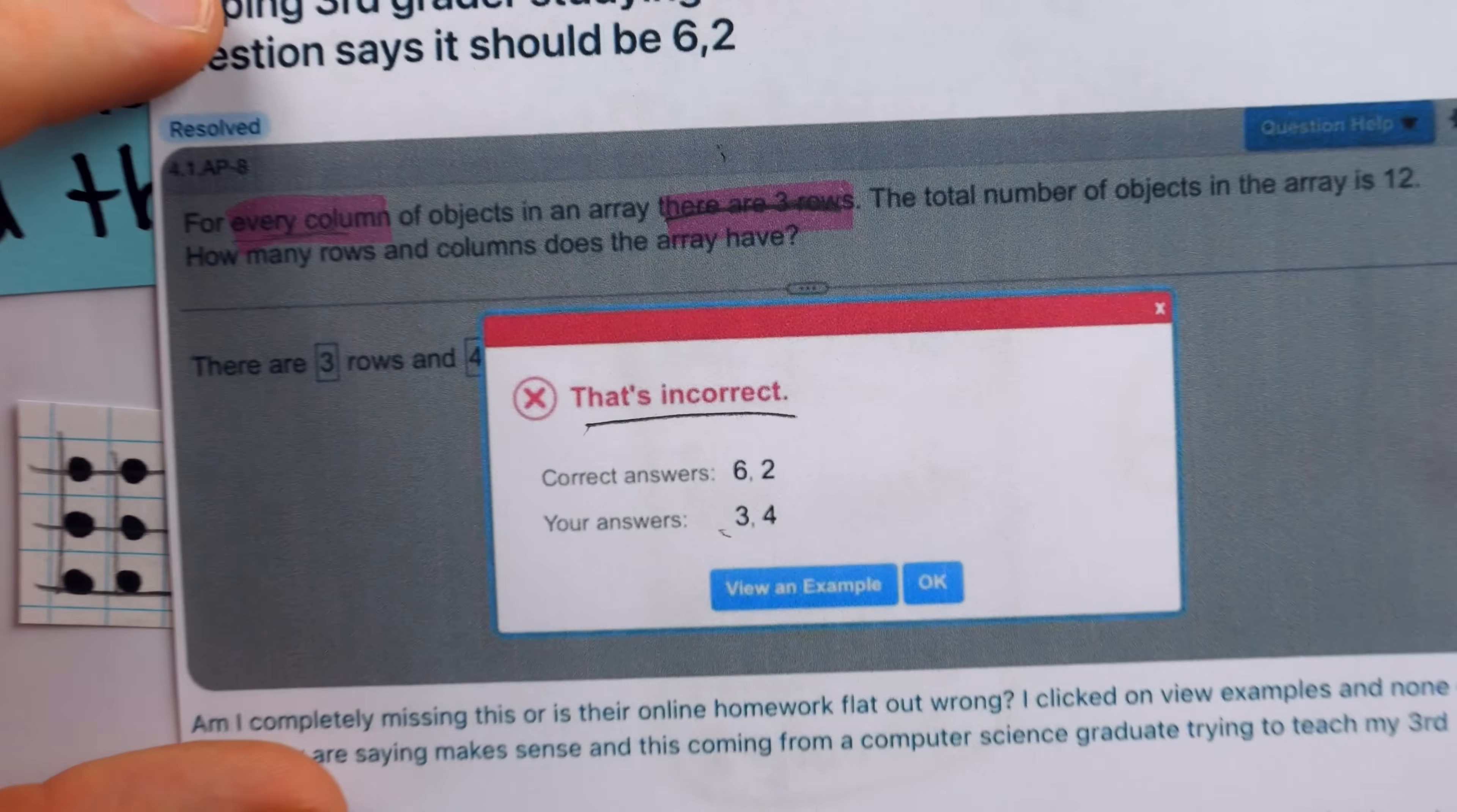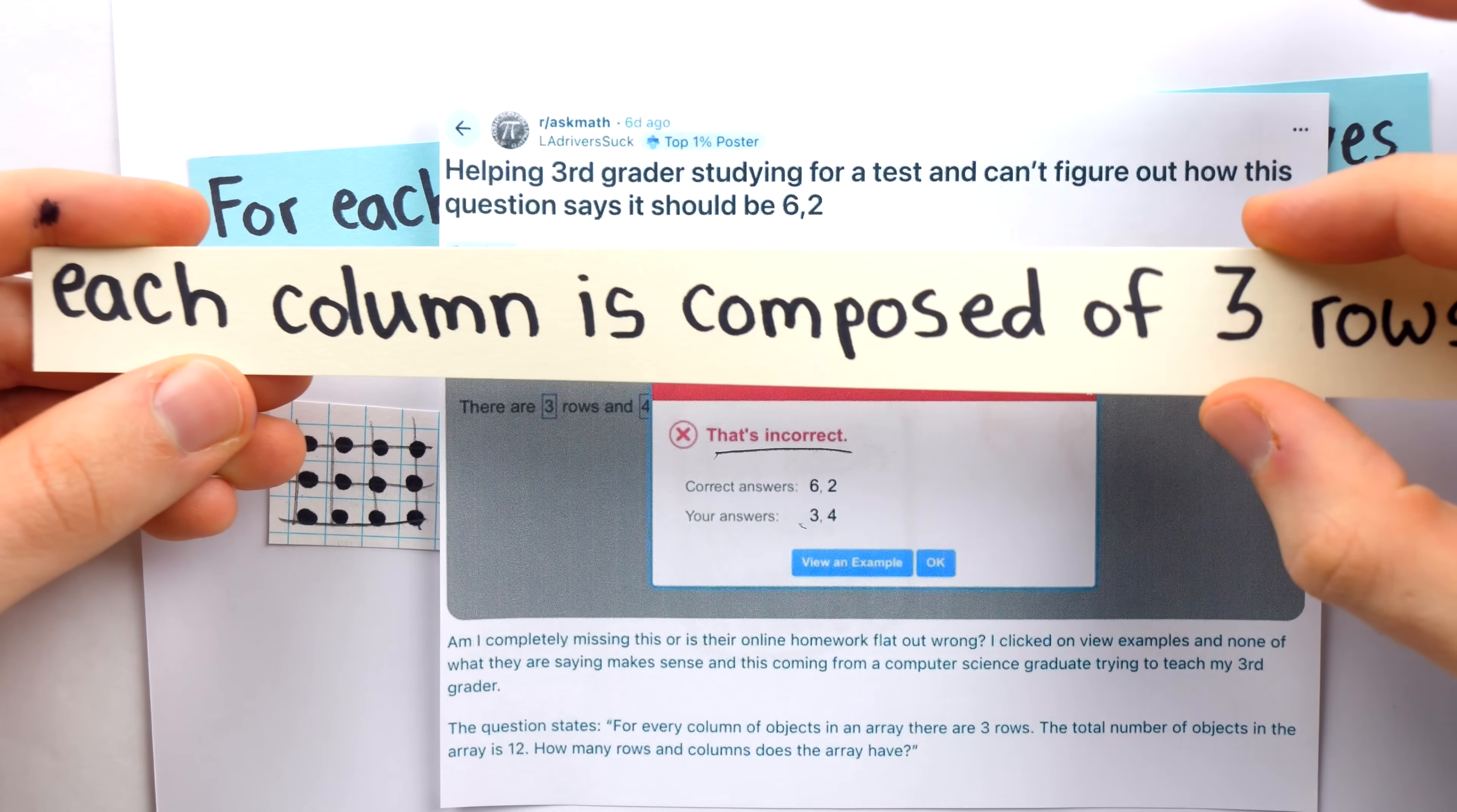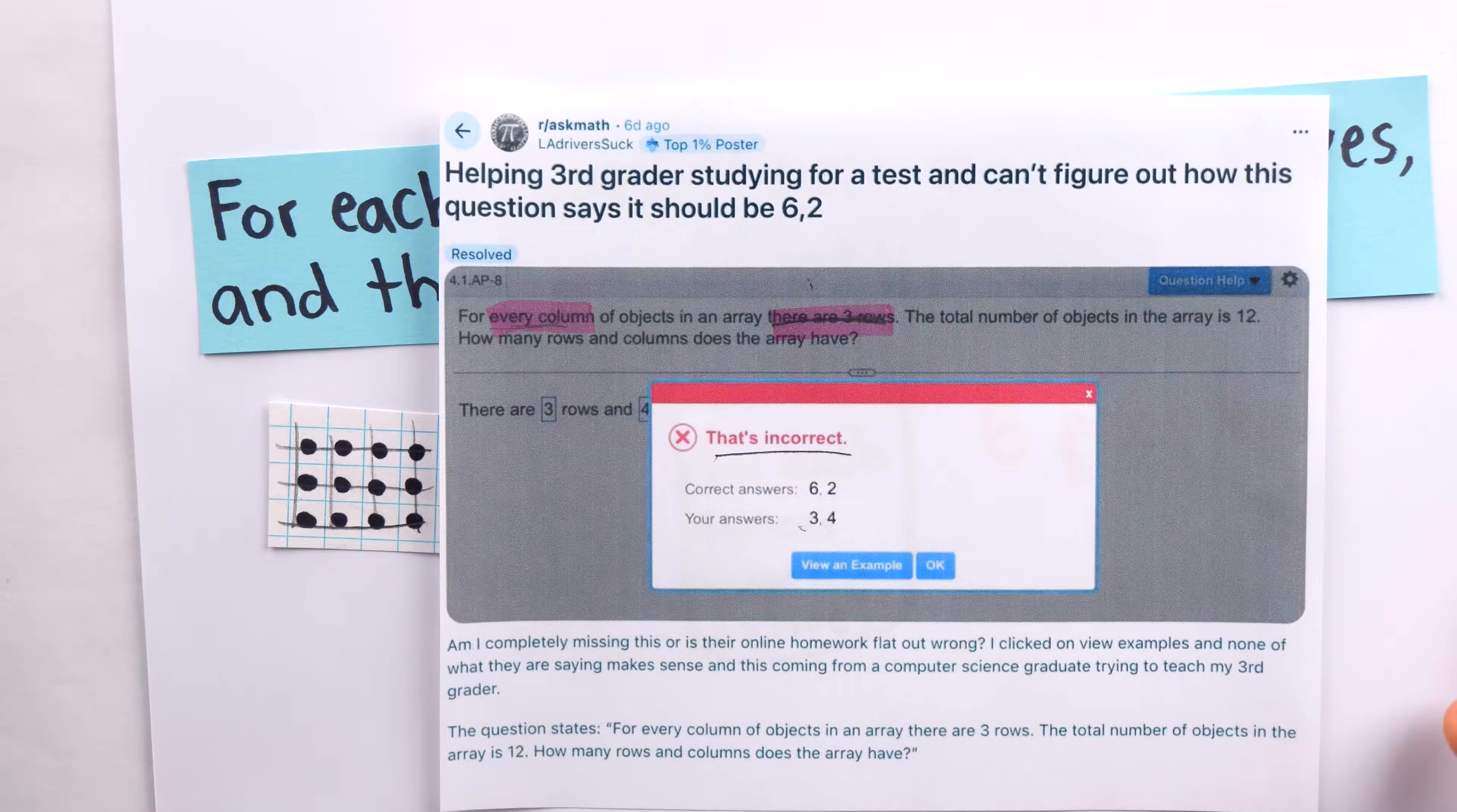When we see the phrase, for every column of objects in an array, there are three rows, that doesn't mean that each column is composed of three rows. No, it means that the number of rows is three times the number of columns.